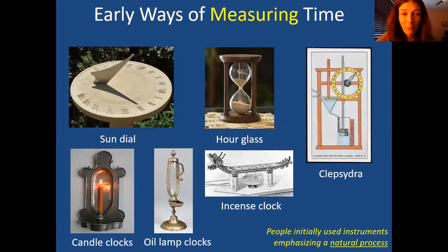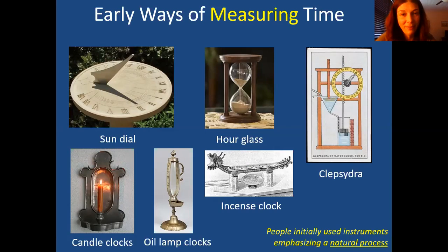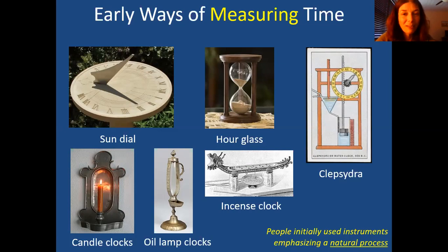Early ways of measuring time weren't as precise as the clocks we have now. They were approximate and based on the natural flow of things — such as the movement of the sun, the hourglass with sand flowing through, the clepsydra with water flowing through, incense burning, candle clocks, and oil lamp clocks. All approximate measurements based on how these things naturally flowed.